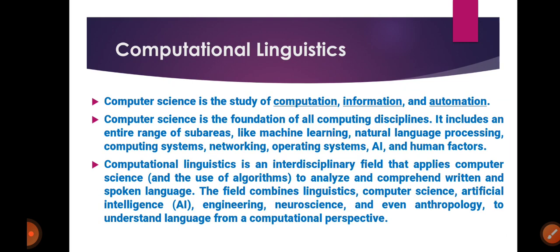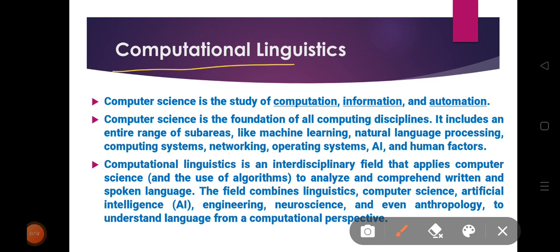Next is computational linguistics. Computer science is the study of computation, information, and automation, and includes sub-areas like machine learning, natural language processing (NLP), computing systems, networking, operating systems, artificial intelligence (AI), and human factors.